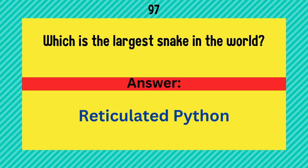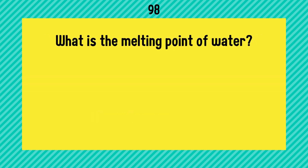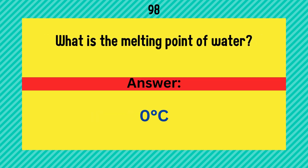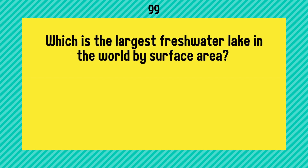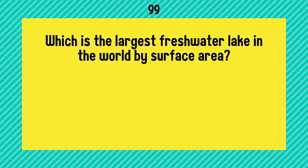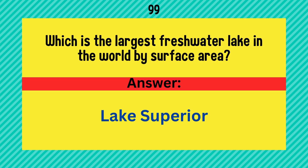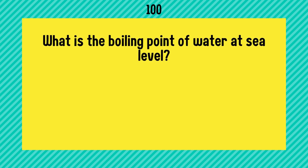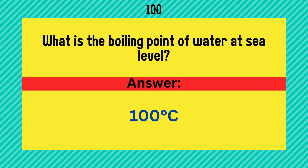Which is the largest snake in the world? Answer is reticulated python. What is the melting point of water? Answer is 0 degrees Celsius. Which is the largest freshwater lake in the world by surface area? Answer is Lake Superior. What is the boiling point of water at sea level? Answer is 100 degrees Celsius.